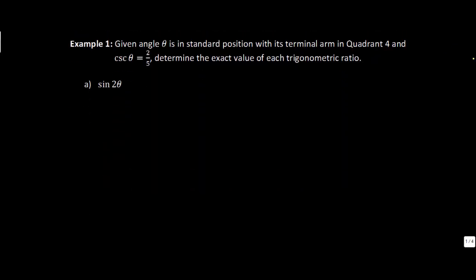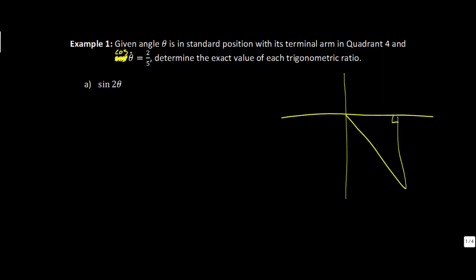Let's dive into example number one. We're given that angle theta is in standard position with its terminal arm in quadrant four and cosine of theta equals 2/5. We need to determine the exact value of sin 2θ and cos 2θ. I'm going to draw my triangle in quadrant four. Cosine is adjacent over hypotenuse, so adjacent is 4 and hypotenuse is 5. Using Pythagoras: 5 squared minus 4 squared gives us the square root of 21, which is negative because we've gone downward.